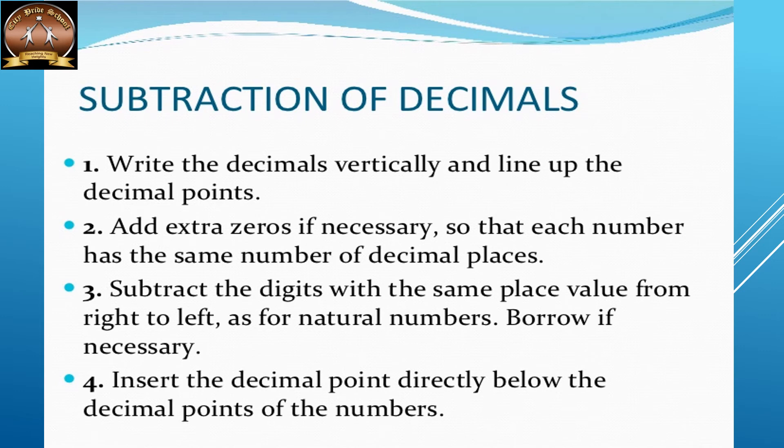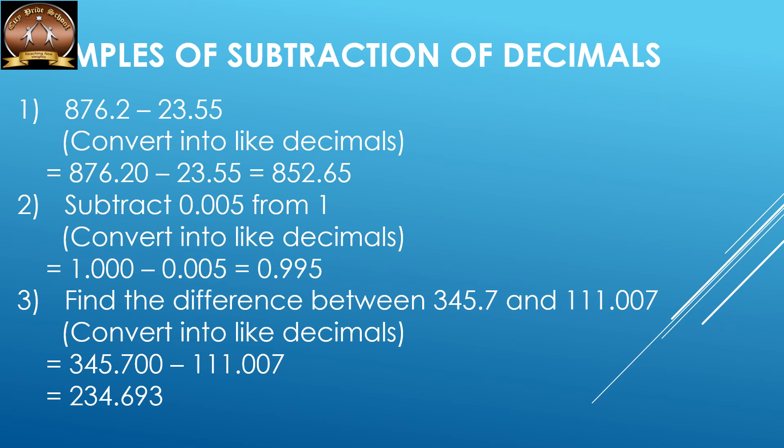Now subtraction — the rules are the same: borrowing and all that applies. The main thing is to write the decimals one below the other with decimal points exactly lined up, then add extra zeros if necessary so each number has the same number of decimal places. For example: 876.2 minus 23.55 — both decimals should have two decimal places, so it becomes 876.20 minus 23.55, giving 852.65.